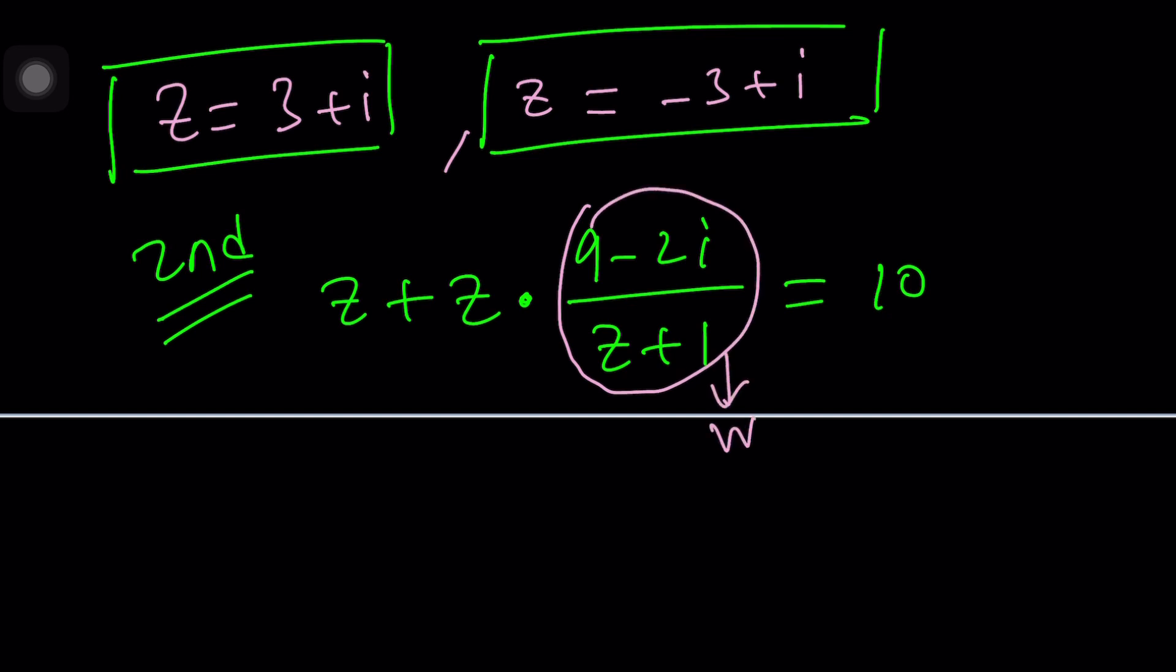This is going to give you a system of equations. A system? Are you sure about that? Well, first of all, let's replace that thing in the bubble, circle, whatever, with w. So we get z plus zw equals 10. Nice.